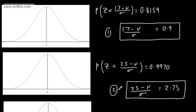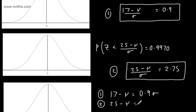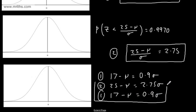If I multiply both sides by sigma and subtract, the mu's are going to drop out. Rewriting equation 1: 17 minus mu equals 0.9 sigma. Equation 2 rewritten: 25 minus mu equals 2.75 sigma. Subtracting downwards eliminates mu. You can rewrite equation 1 below if you don't want negatives — it's entirely up to you, however confident you are with simultaneous equations.